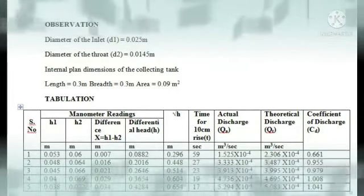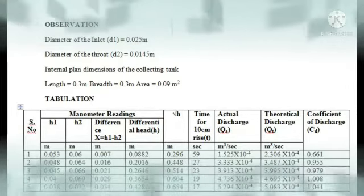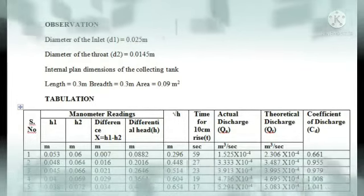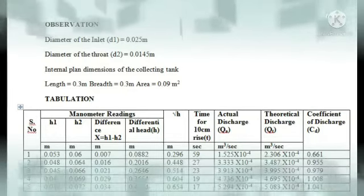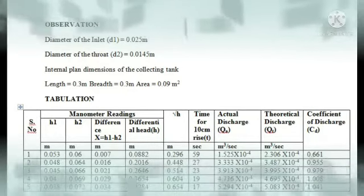In tabular column, we have to take the manometer readings h₁ and h₂. We have to find the difference in h₁ and h₂ readings. We have to take the root h value.